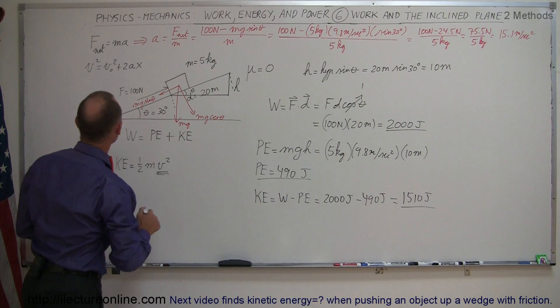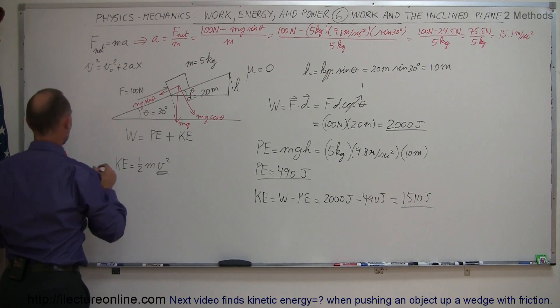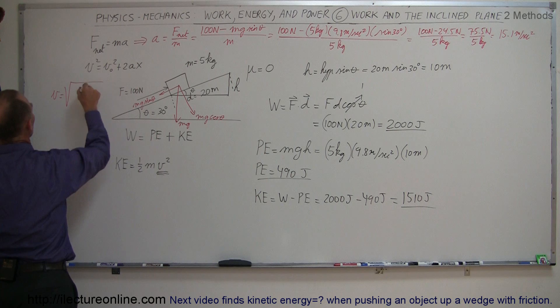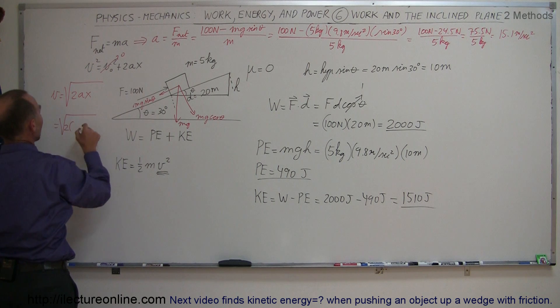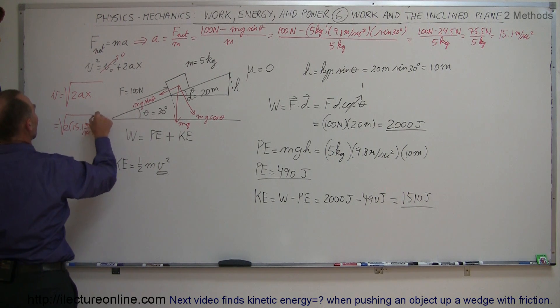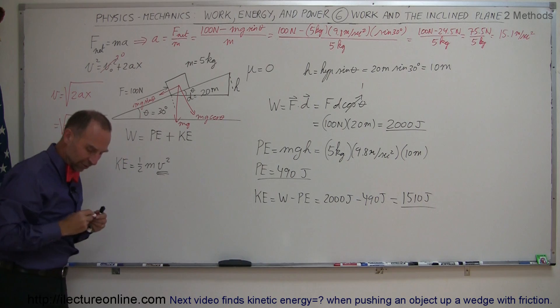so now that we know the acceleration, we can come over here. And so we can now say that v is equal to the square root of 2ax, because v initial, that will go to 0. So this is equal to the square root of 2 times what we just found, 15.1 meter per second squared, times the distance of 20 meters.